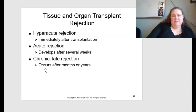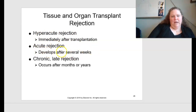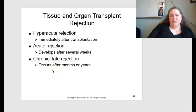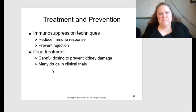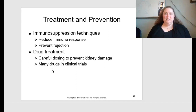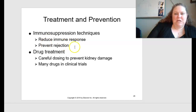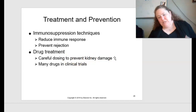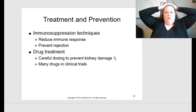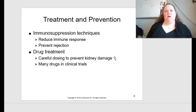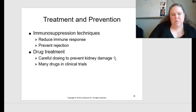Tissue and organ transplant rejection, discussed on page 121: hyperacute rejection occurs immediately after transplantation; acute rejection develops after several weeks; chronic or late rejection occurs after several months or years. People who get organ transplants must take anti-rejection medication for the rest of their life to try to prevent chronic rejection. Drug treatments require careful dosing to prevent kidney damage, and there are many drugs currently in clinical trials.